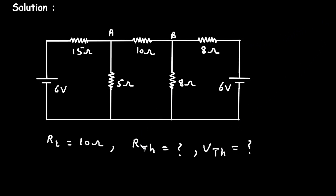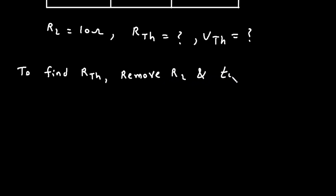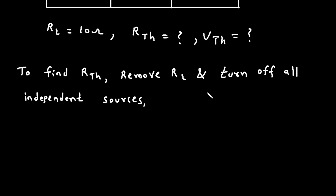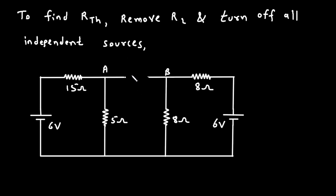First, let's find the value of RTH. To find RTH, we will remove RL and turn off all independent sources. So here, let's remove RL — this is our RL — and now this will be removed. And now, this will be our RTH.